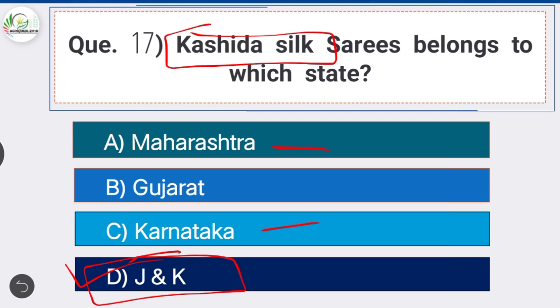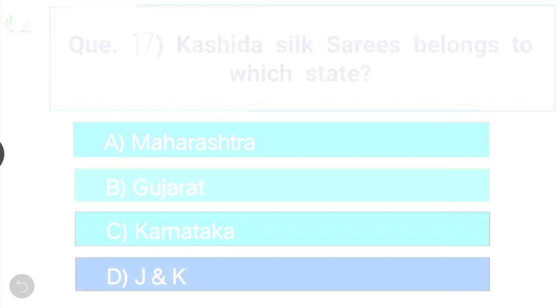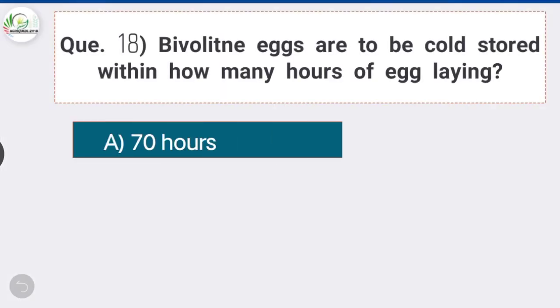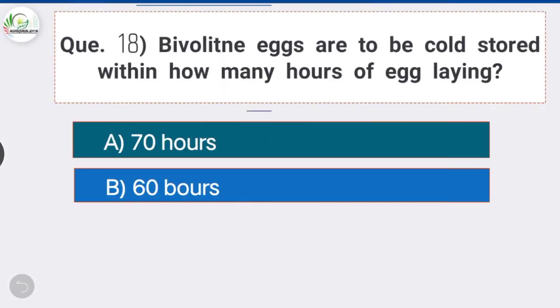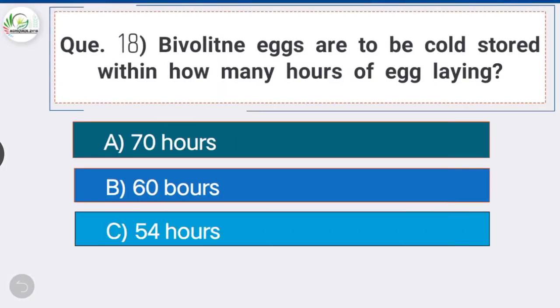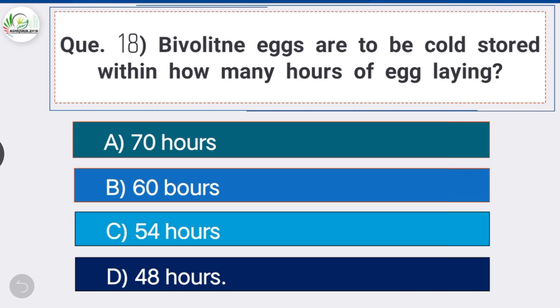Question number eighteen: bivoltine eggs are to be cold stored within how many hours of egg laying? Option D is the correct answer — 48 hours. Bivoltine eggs are to be cold stored within 48 hours of egg laying.